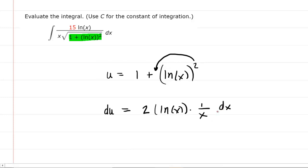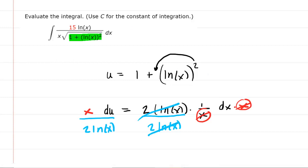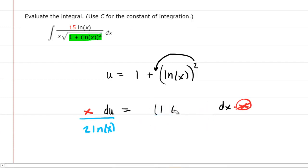We typically like to solve for dx when using this method. So we'll multiply both sides by x. The x in the numerator and the x in the denominator will cancel out. Then continuing to solve for dx, we can divide both sides by 2 ln of x. That will cancel on the right-hand side, leaving you with dx.